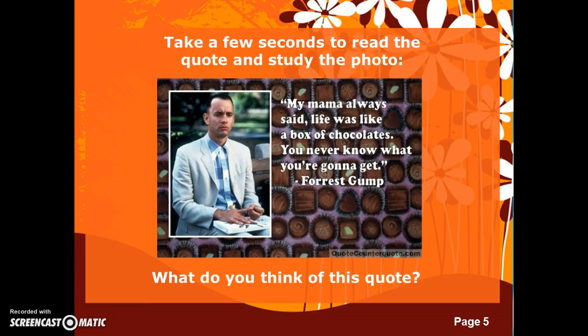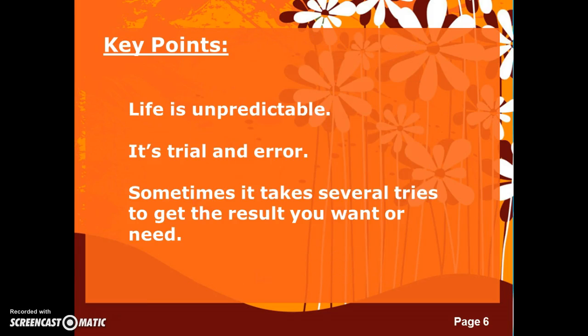Take a few seconds to read the quote next to the photo. What do you think this quote could mean? Basically, it's just saying that life is unpredictable. You can't tell what's going to happen just by looking at something. You can't tell what kind of piece of chocolate is in that box just by looking at it — you've got to try it, you've got to taste it. Life is simply trial and error. Sometimes it takes several tries to get the result you want or need.